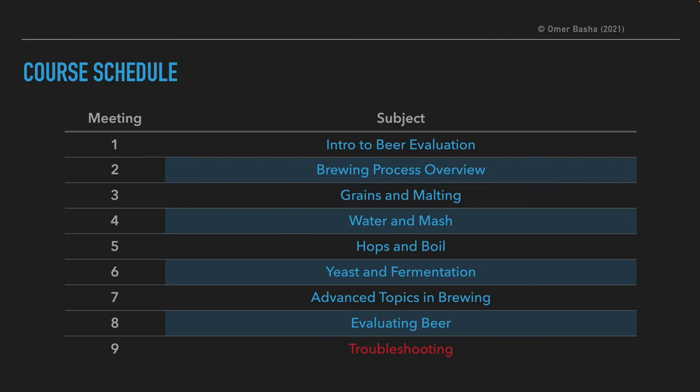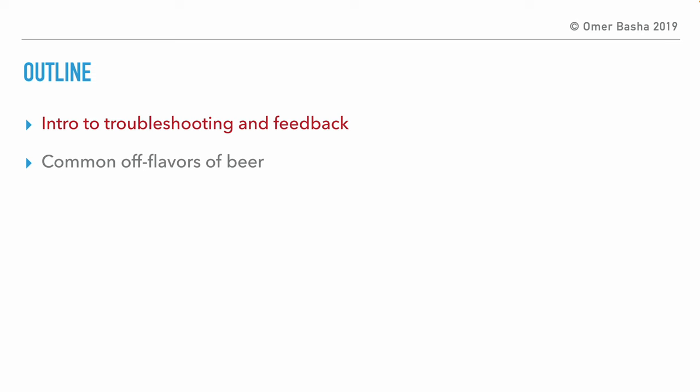This is the ninth presentation of the beer evaluation course and the last one. In it we will focus on troubleshooting beer. The layout of today's presentation: we will talk about why we should troubleshoot beers, common off flavors and how the brewer can control them.